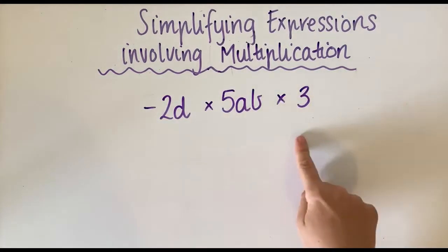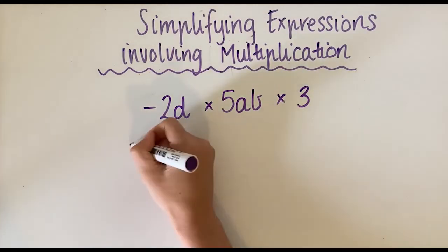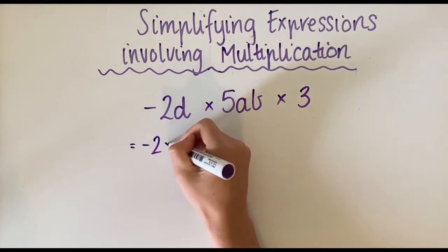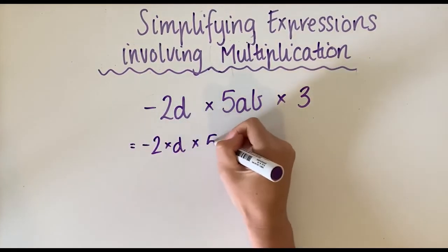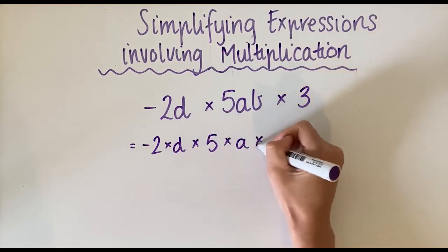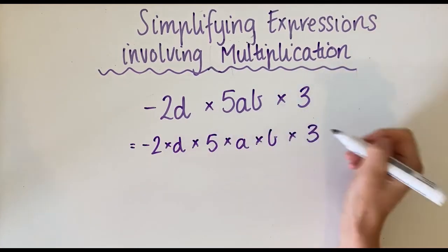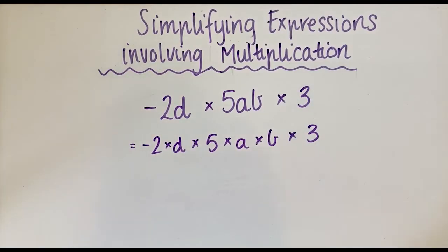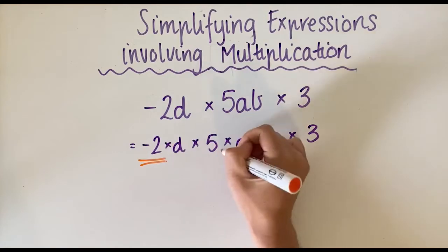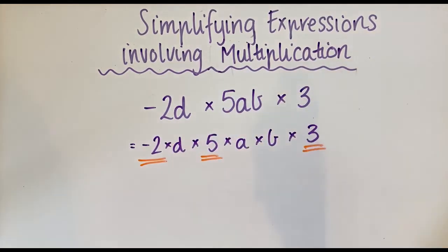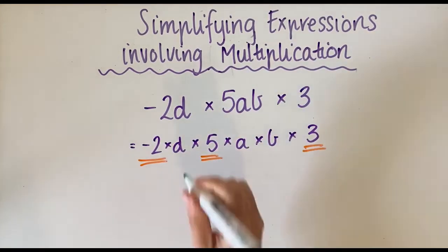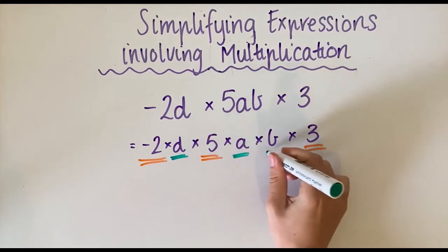For this one, we've got three terms. We're going to stretch them all out first. So we're going to go -2 × d × 5 × a × b × 3. Remember, we put all the numbers together and all the pronumerals together. So we're going to go -2, 5, and 3, and we've got d, a, and b.